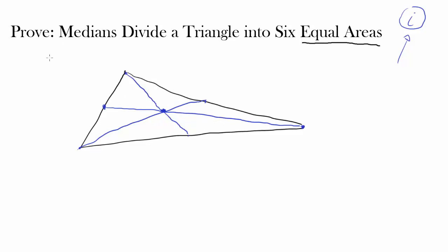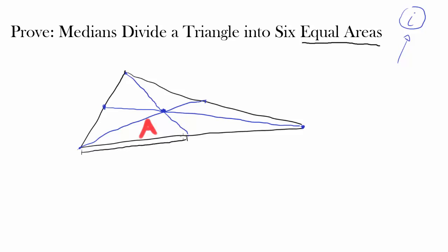We want to prove that all six areas are equal, which seems surprising because the triangles are shaped differently. Let's start by assigning a value of 'a' to the area of one of these triangles. Since the area of a triangle is one-half base times height, and medians divide the opposite side into equal parts, this side is also B and this triangle also has the height H. So we know this triangle has the same area 'a' as the first one.